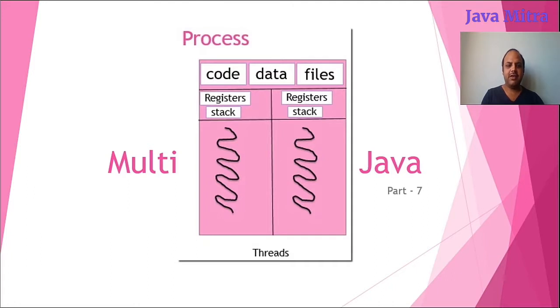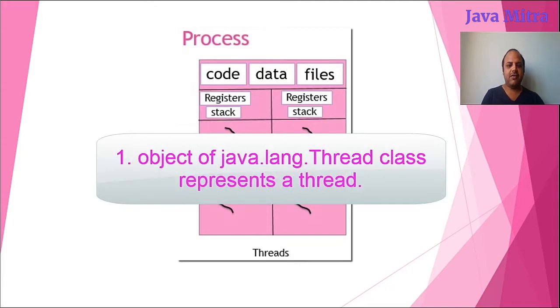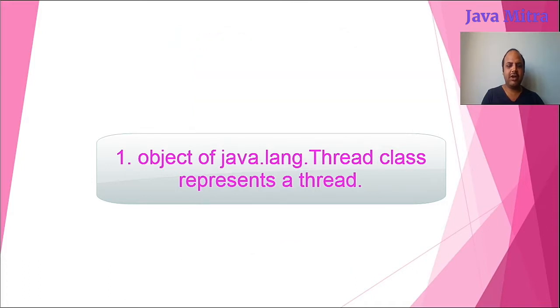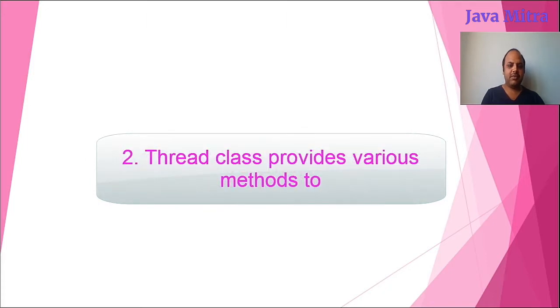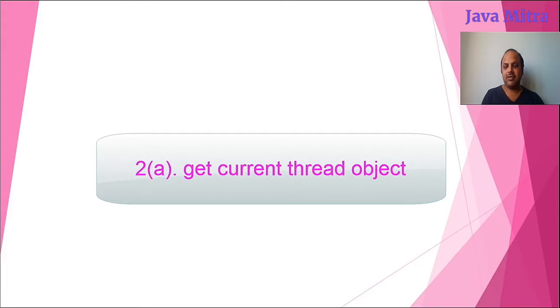What's a thread? In summary, I can say a thread is an independent execution path with its own call stack. An object of java.lang.thread class represents a thread. Thread class provides various methods to get current thread object with the help of a static method of thread class.